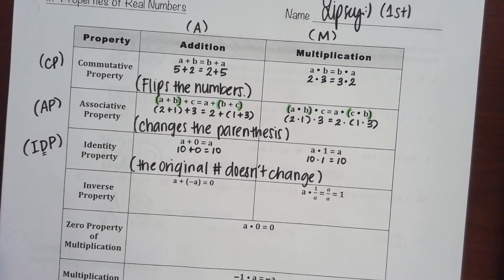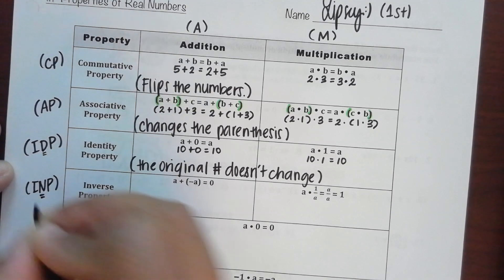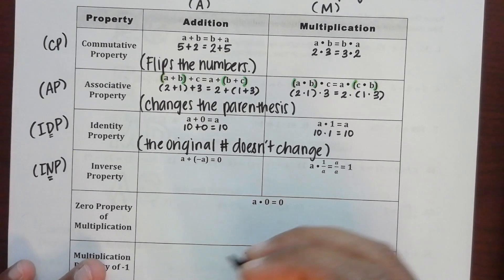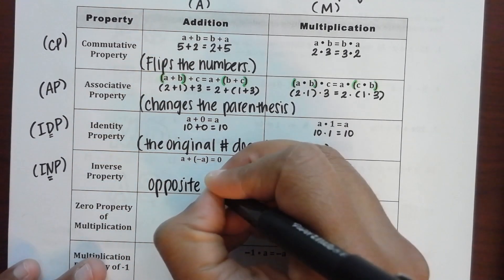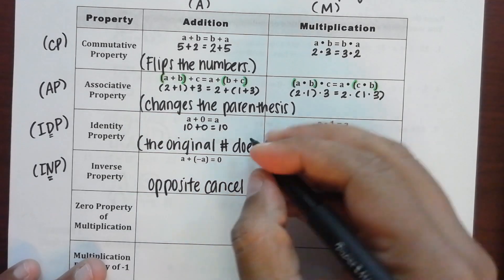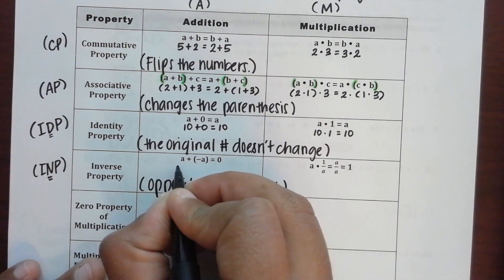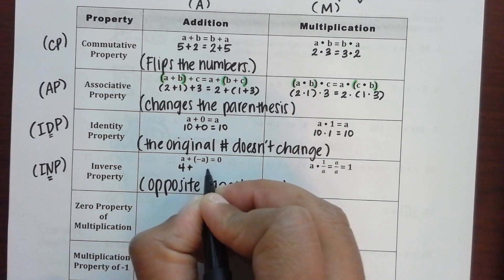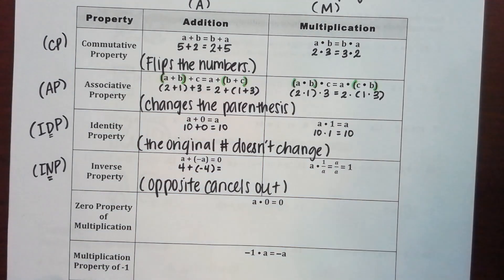The inverse property — that's INP. Inverse means the opposite. The goal is the opposite cancels out. So if I'm looking at four, what's the opposite of four? Negative four. Let's type this into our calculator: four plus negative four.